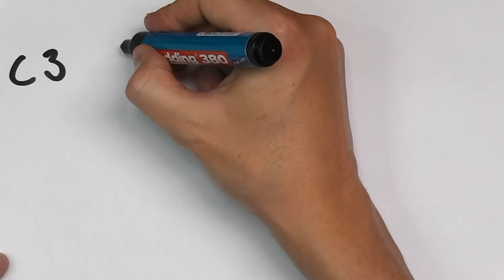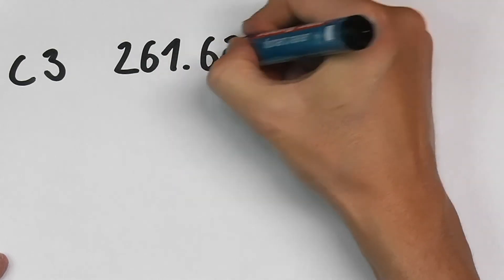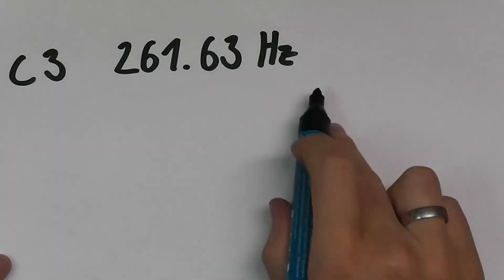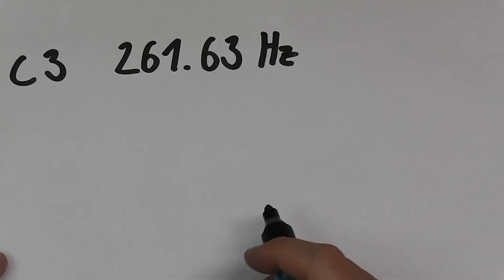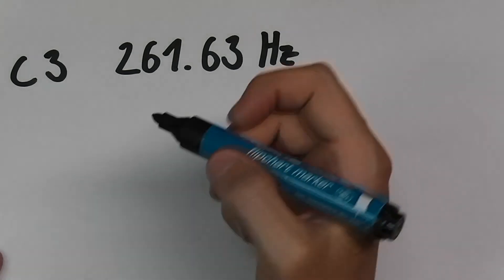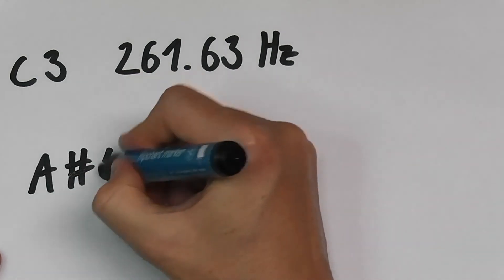Okay, so this is our base tone. Now for each note there is an offset, and for each octave there is also an offset which needs to be multiplied by 10. So let's say we want to calculate the frequency of A sharp 5.